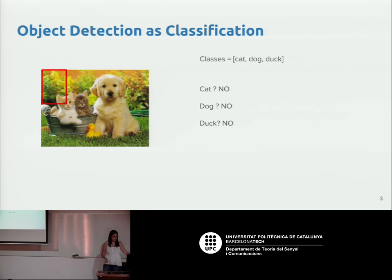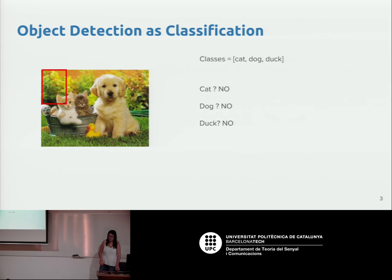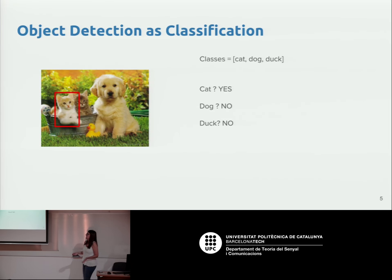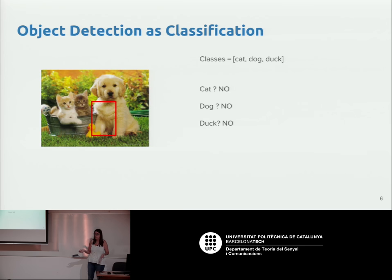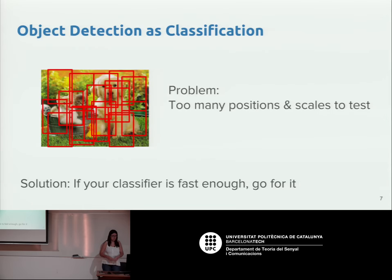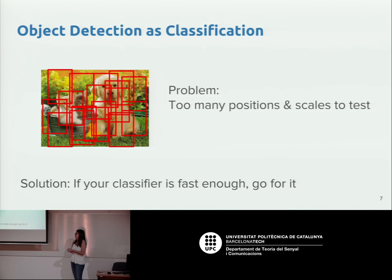For instance, we define a window and ask: is there a cat, a dog, or a duck? Here the answer might be no. We move this window across the whole image and ask the same question to the classifier. The problem is that if we want to give a bounding box to a dog, this bounding box might be too small — incorrect scale. This complicates casting object detection as simple classification because there are too many positions, aspect ratios, and scales to evaluate.